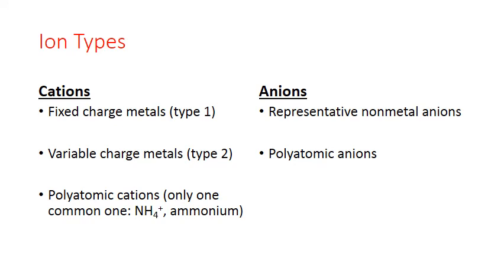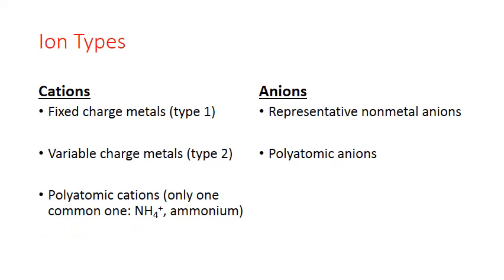Our third group are the polyatomics, and they can fall on both sides — you can have cations and polyatomic anions. Most of the polyatomics are actually anions; there's only one really common cation, and that's ammonium, NH4+. And finally we have our representative non-metal anions, which are fixed charge — we can predict what that charge is going to be based upon the position of these non-metals on the periodic table.